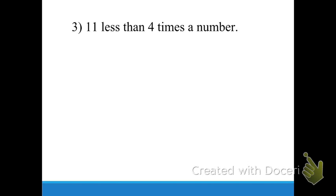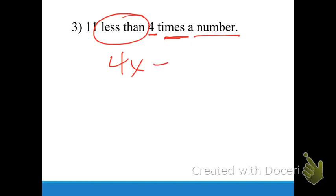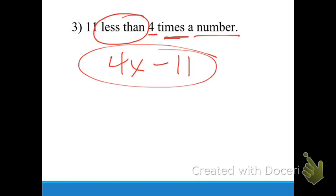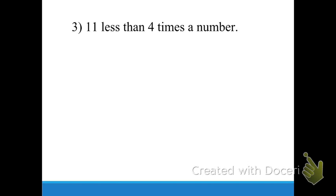Number three: 'eleven less than four times the number.' What's different about this one? There's a turnaround word — 'less than.' So what comes after 'less than' goes first: four times a number, which is four X. Then 'less than' means subtract eleven. So the answer is four X minus eleven. The 'less than' means whatever comes after it needs to go first, and whatever comes before it goes second.